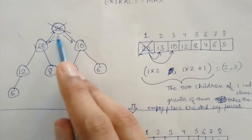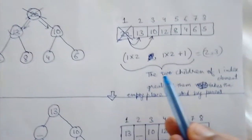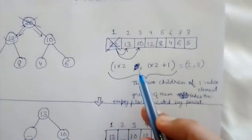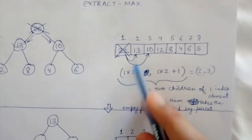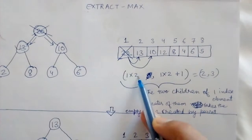In our algorithm, the index of 20 is 1, so the index of its children will be 1×2 and 1×2+1, that is 2 and 3.